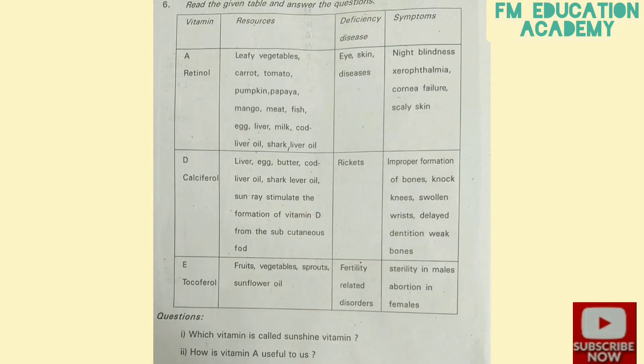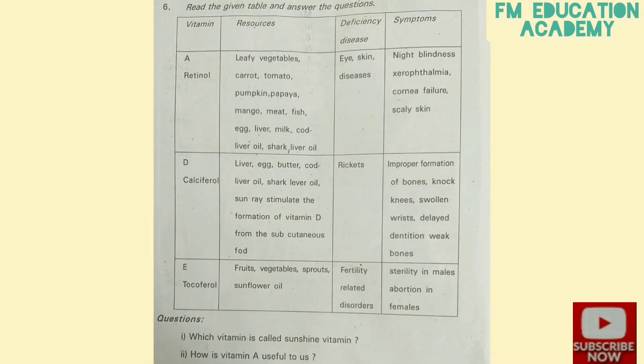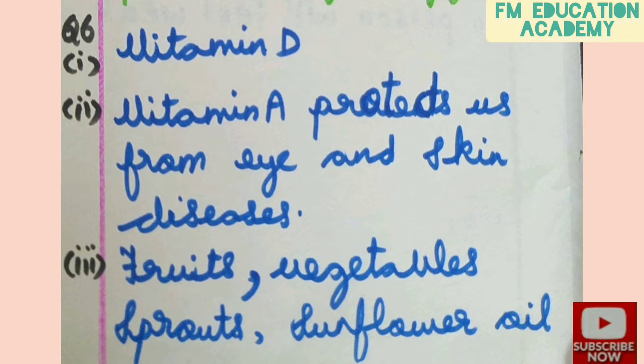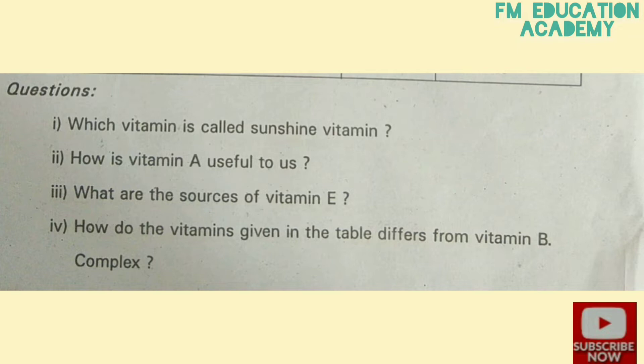Second bit: how is vitamin A useful to us? From the table, deficiency of vitamin A causes eye and skin diseases. So the answer is: vitamin A protects us from eye and skin diseases.